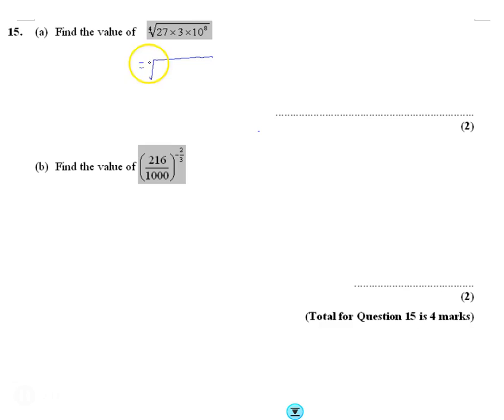If you spot that 27 is really 3 cubed, that's 3 cubed times 3 here. So 3 cubed times 3 is 3 to the power of 4, and let's leave 10 to the power of 8 there.